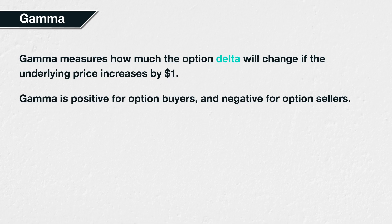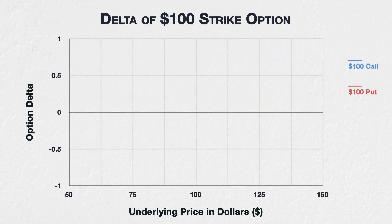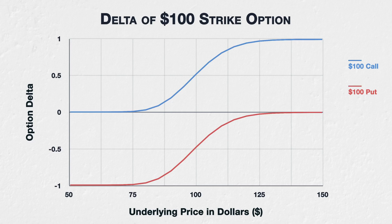Meaning that the delta of their option will increase if the underlying price increases by one dollar. Let's think about what that means by using a call option as an example. In lecture 8.2, we looked at how the delta of a call option changed as the underlying price changes. We looked at this chart, which shows the delta of both the $100 call in blue and the $100 put in red. We have also set a days to expiry of 30 and an implied volatility of 40%. When the underlying price is at $100,